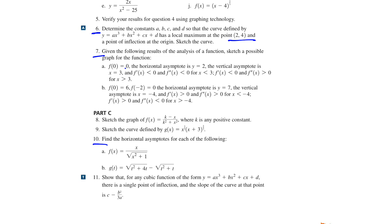We know (2, 4) is a point on the graph of the function. This means f(2) equals 4. Since (2, 4) is the local maximum of the function, when we plug 2 into the derivative of the function, the derivative would be 0. Similarly, (0, 0) is a point on the graph, meaning when X is 0, Y is 0.